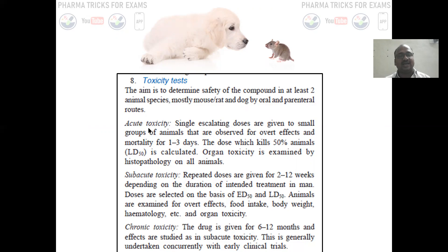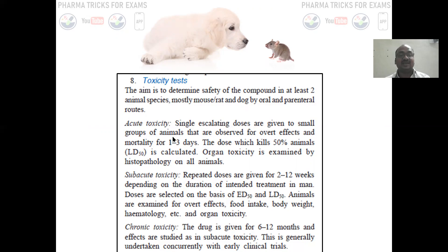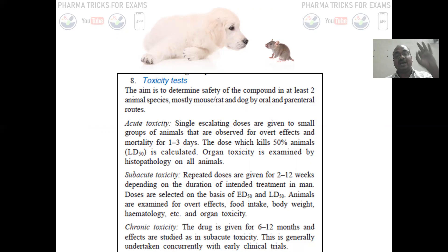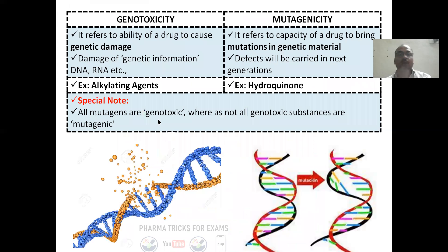For acute toxicity tests, you study the animals over one to three days. For subacute toxicity, it is two to twelve weeks. And for chronic toxicity study, you study in the animal for six to twelve months and check the toxicity produced in the animal's body.